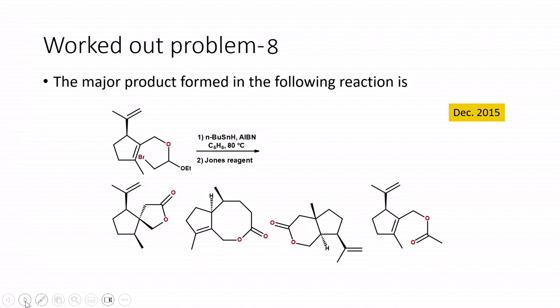Let us move on to a slightly more complicated reaction. Here we find the major product formed in a reaction asked in December 2015. The starting material already contains the bromoacetal derivative — in the previous problem we prepared it and then cyclized; here it is present from the start. The key difference is that this substrate has two double bonds, whereas in the previous case there was only one double bond, making competition between 5-membered and 6-membered ring formation relevant.